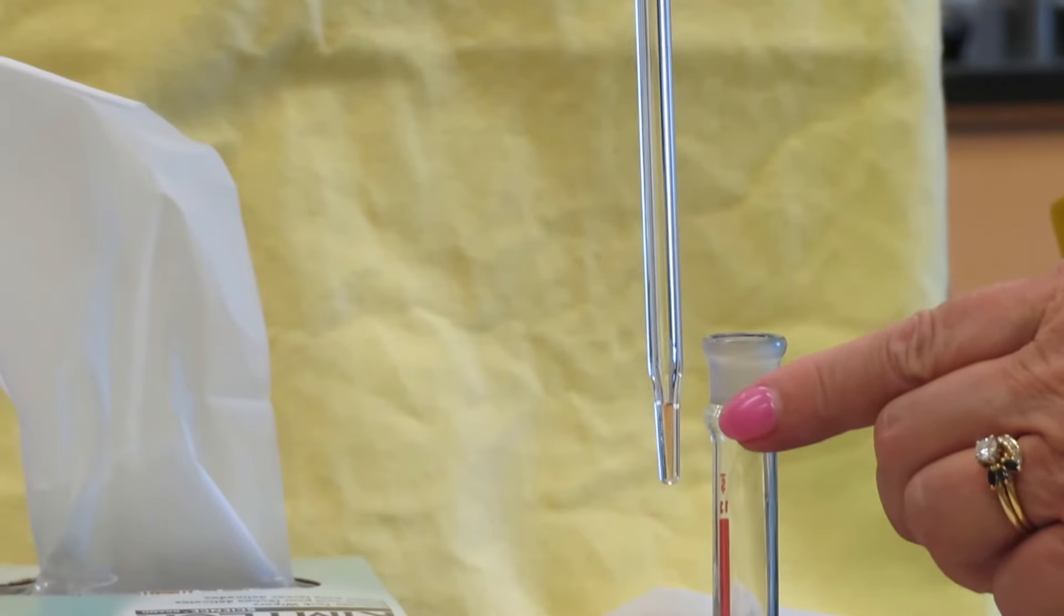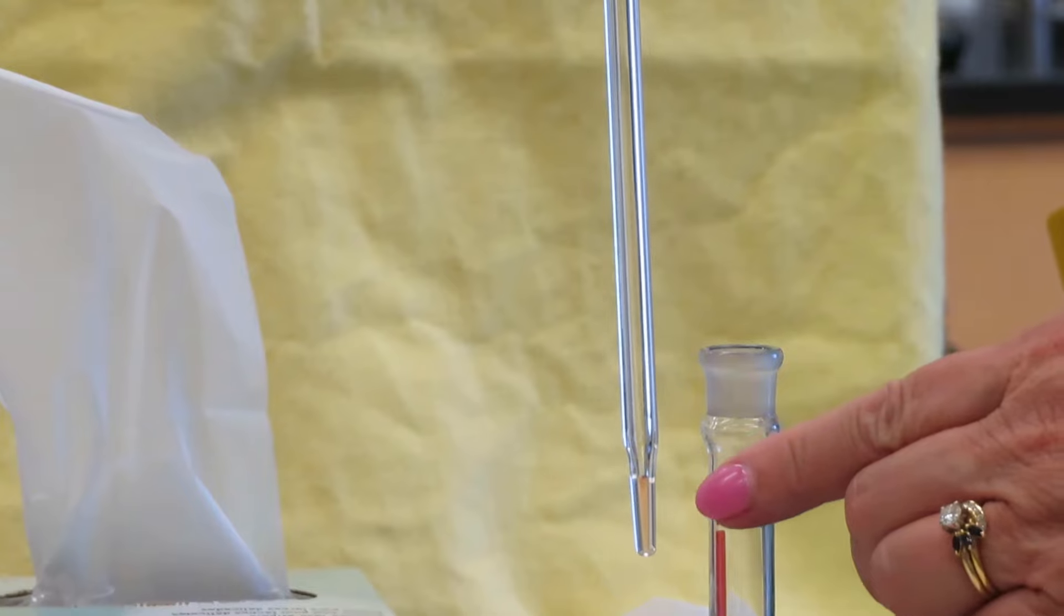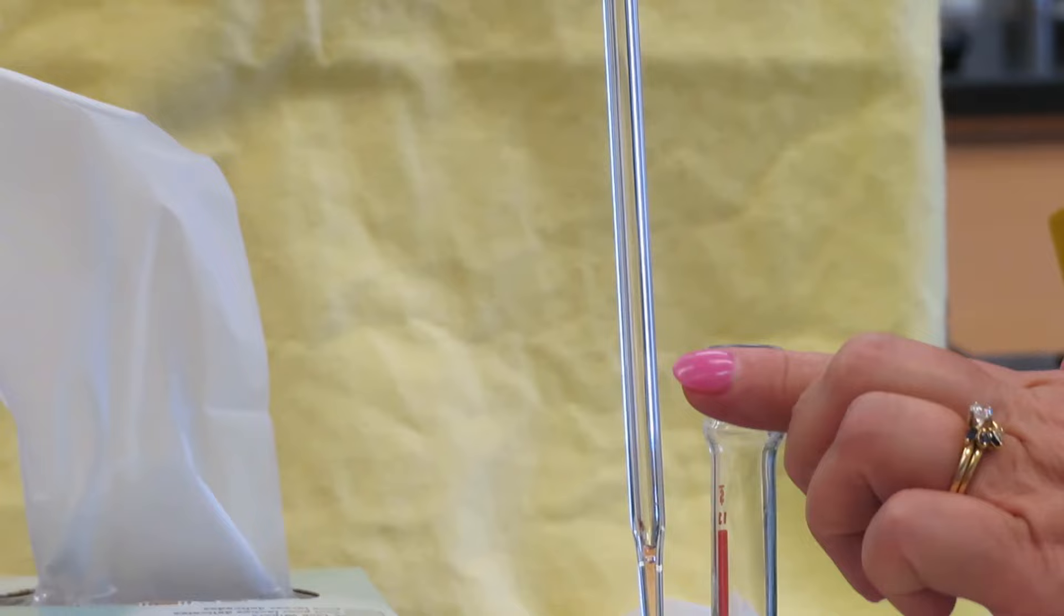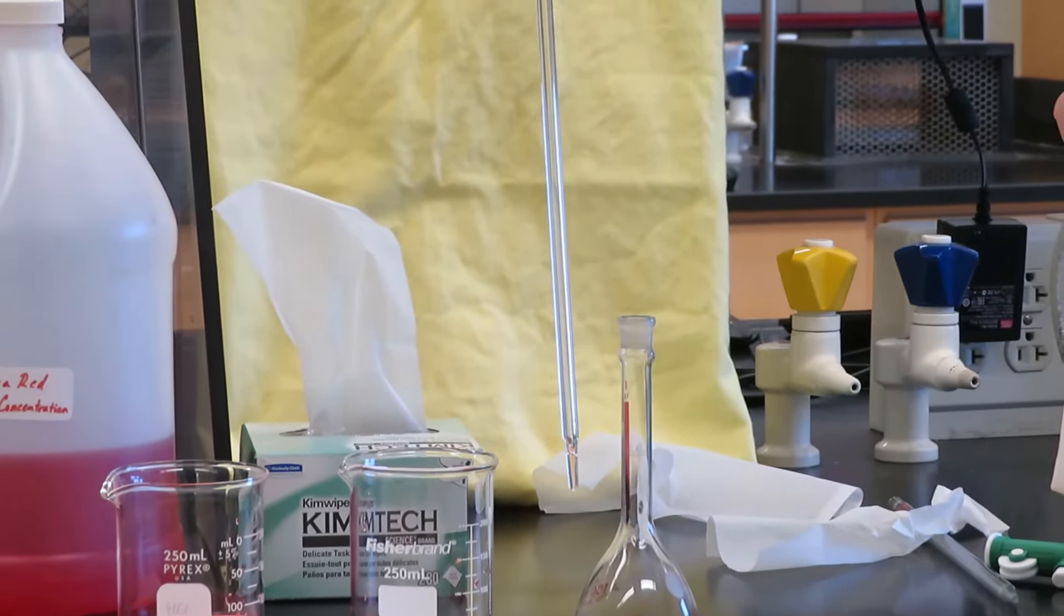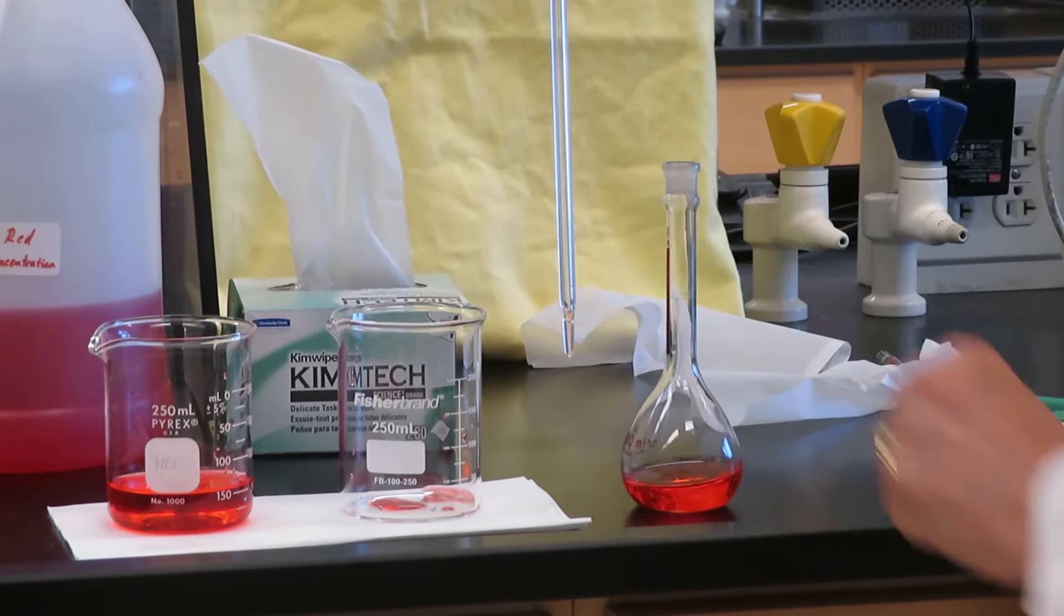You may notice when I'm finished, there's a slight amount of volume in the tip. That's fine, you don't need to blow that out because volumetric pipettes are calibrated to have a tiny amount of volume in the tip when you're finished dispensing. Now I can go on with making my solution.